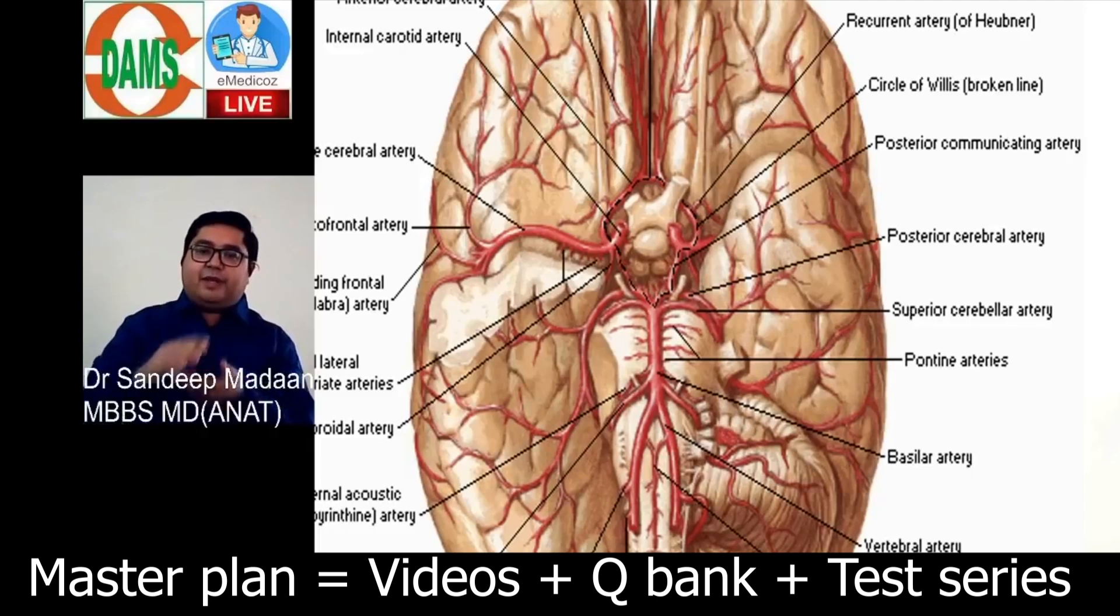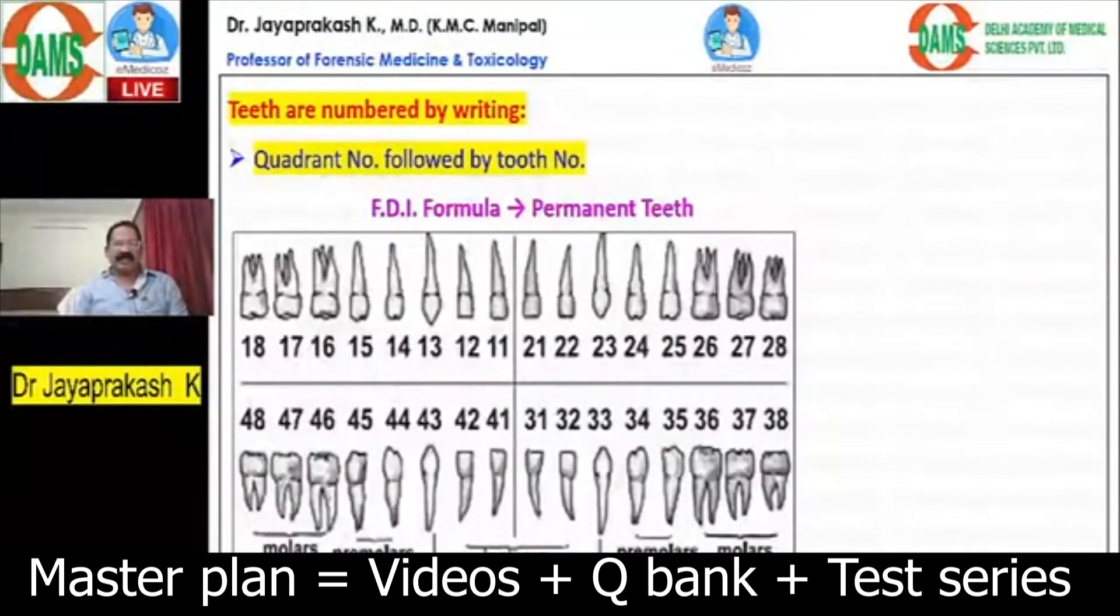Permanent teeth are always numbered like this: starting from 11, 12, 13, 14, 15, 16, 17, 18 till 48.